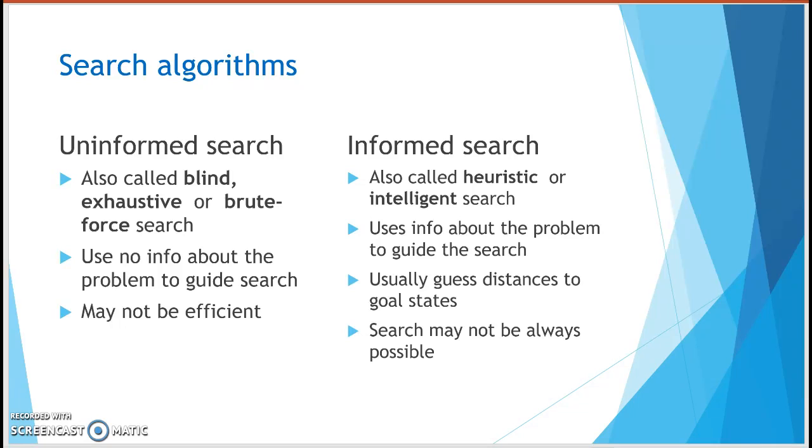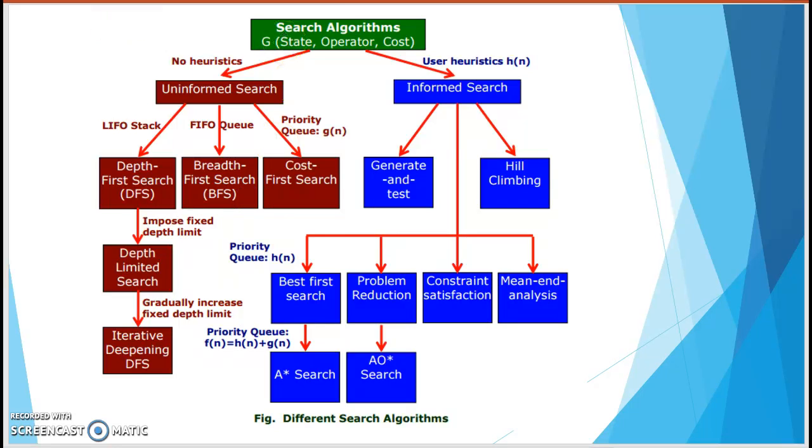There are basically two main types of searching algorithm. First one is uninformed search. This is not uniform, it's uninformed. That means the searching is without any information. And the second one is an informed search. That means that we have some heuristic or intelligent search here. We know what is in the future or the next node. But for uninformed search, also called as blind, exhaustive or brute force search, we just go to the next node without knowing what is the value of the next node.